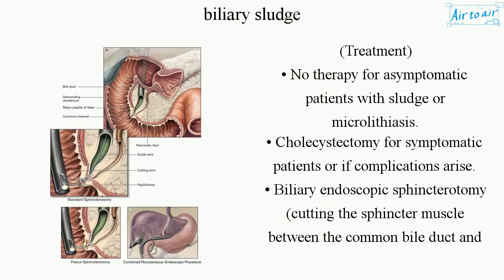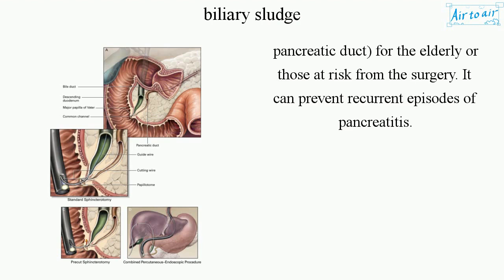Treatment: No therapy is needed for asymptomatic patients with sludge or microlithiasis. Cholecystectomy is indicated for symptomatic patients or if complications arise. Biliary endoscopic sphincterotomy — cutting the sphincter muscle between the common bile duct and pancreatic duct — is an option for the elderly or those at surgical risk, and can prevent recurrent episodes of pancreatitis.